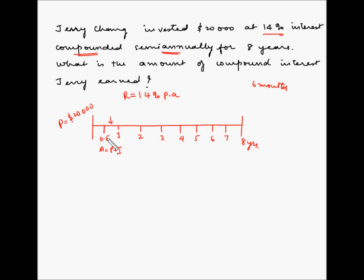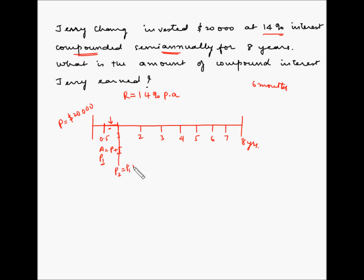That combined amount — principal plus interest — becomes the new principal P1 for the second compounding period. Similarly, whatever interest accrues during the second compounding period will be added to P1, making a new amount P2 for the next period.